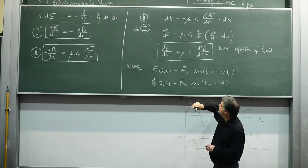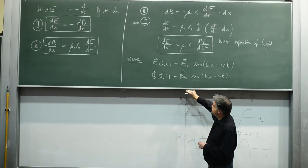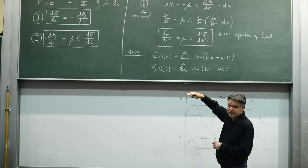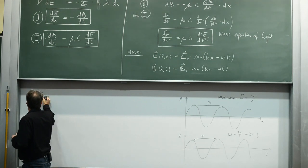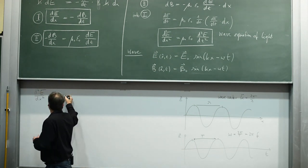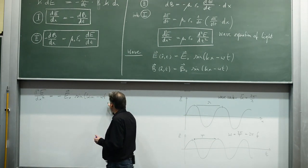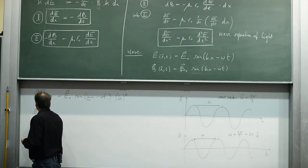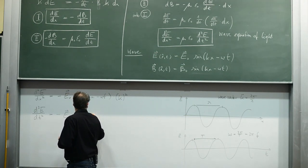Back to our wave equation. Now we want to prove that this assumption for the electric field is indeed a solution of that wave equation. We build the second derivatives. The sinus gives a cosine, and the second derivative a minus sign. d squared E by dx squared is minus E0 sin(kx minus omega t), and don't forget twice the inner derivative.